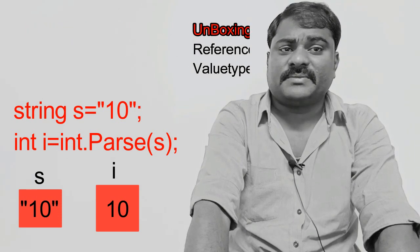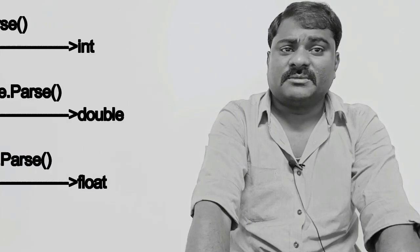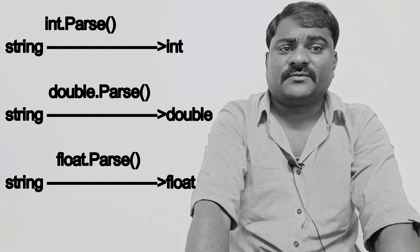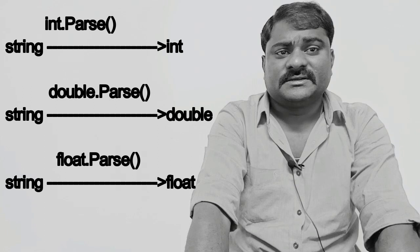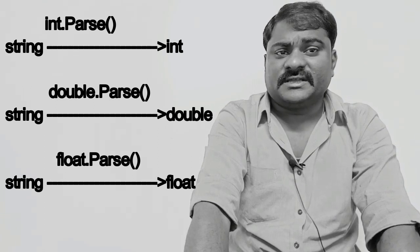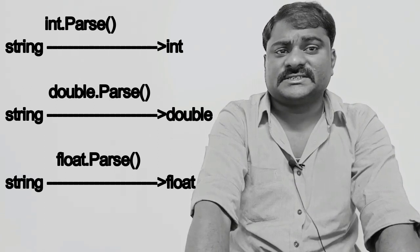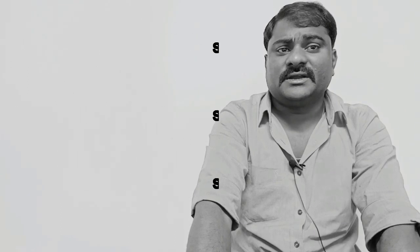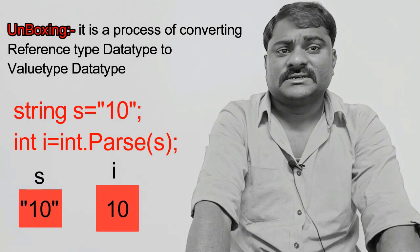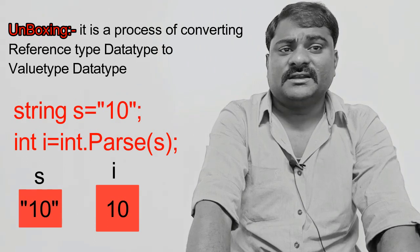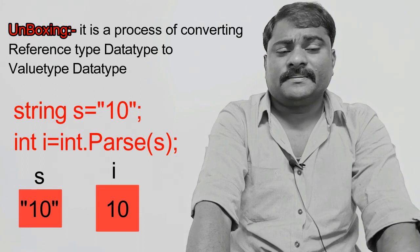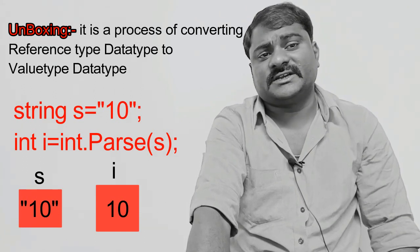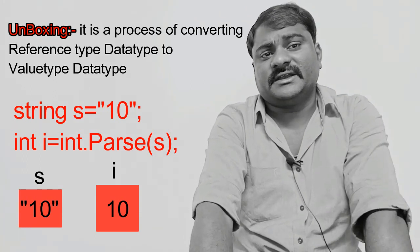String to int: int.Parse(). String to double: double.Parse(). String to float: float.Parse(). For example, string s equal to "10" (in double quotes), int i equal to int.Parse(s). Here s is a string variable, i is an integer variable. What int.Parse() does is convert the string to integer and store it in the integer variable.